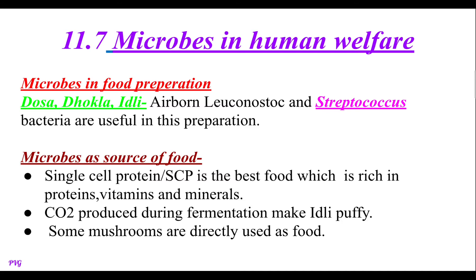The next important point is 11.7, that is microbes in human welfare. These microbes are used in different methods. For example, microbes in food preparation — there are a number of examples of microbes used in food preparation, such as dosa, dhokla and idli. Airborne Leuconostoc and Streptococcus bacteria are useful in this preparation. Bubbles are produced during making the flour of dosa, dhokla and idli.